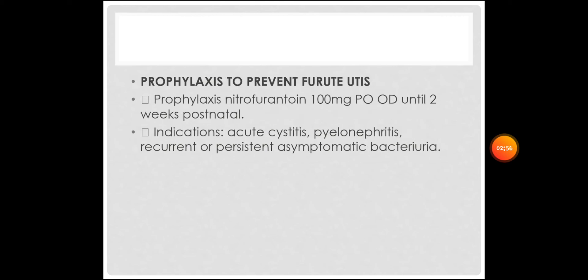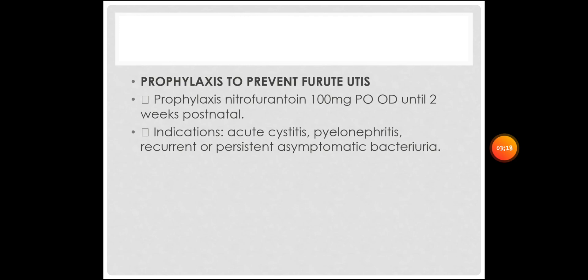Prophylaxis to prevent future UTIs is nitrofurantoin 200 milligrams orally once a day until two weeks postnatal. Indications for prophylaxis include acute cystitis, pyelonephritis, and recurrent or persistent asymptomatic bacteriuria. That's all about UTIs in pregnancy. Thank you.